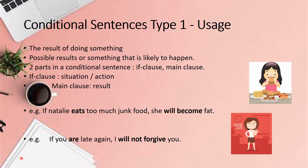Let's look at when we should use conditional type 1. We use conditional sentences to talk about the result of doing something. For conditional sentence type 1, we talk about the possible results, or something that is likely to happen. There are two parts in a conditional sentence: the if clause and the main clause. In the if clause, we talk about the situation or the action. For the main clause, we talk about the result.